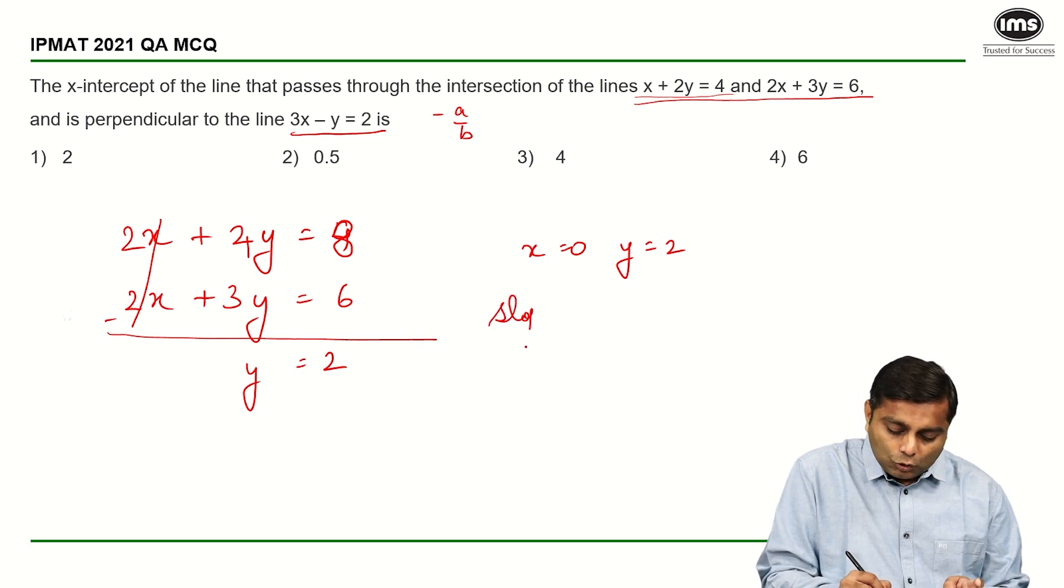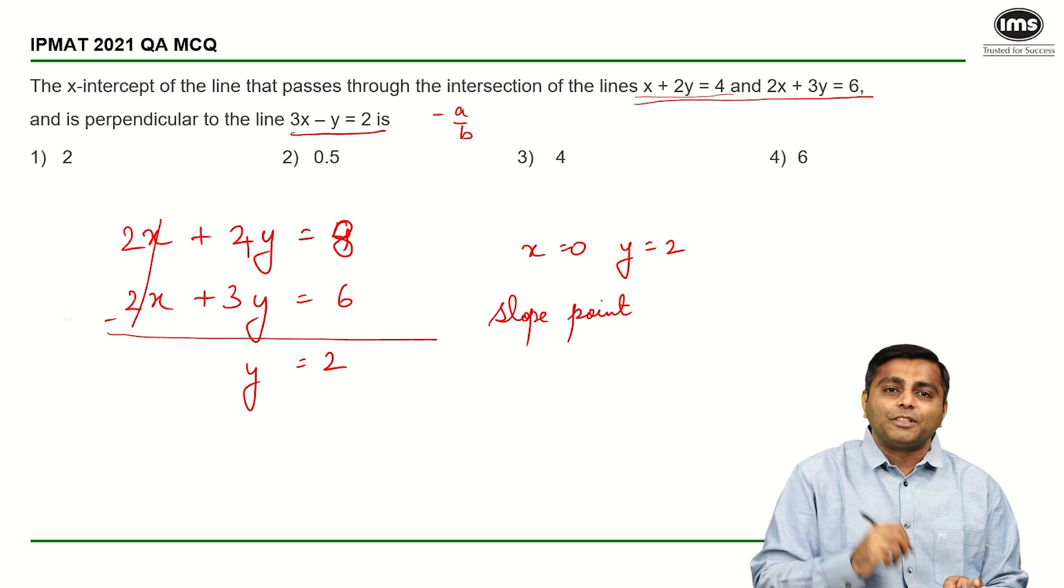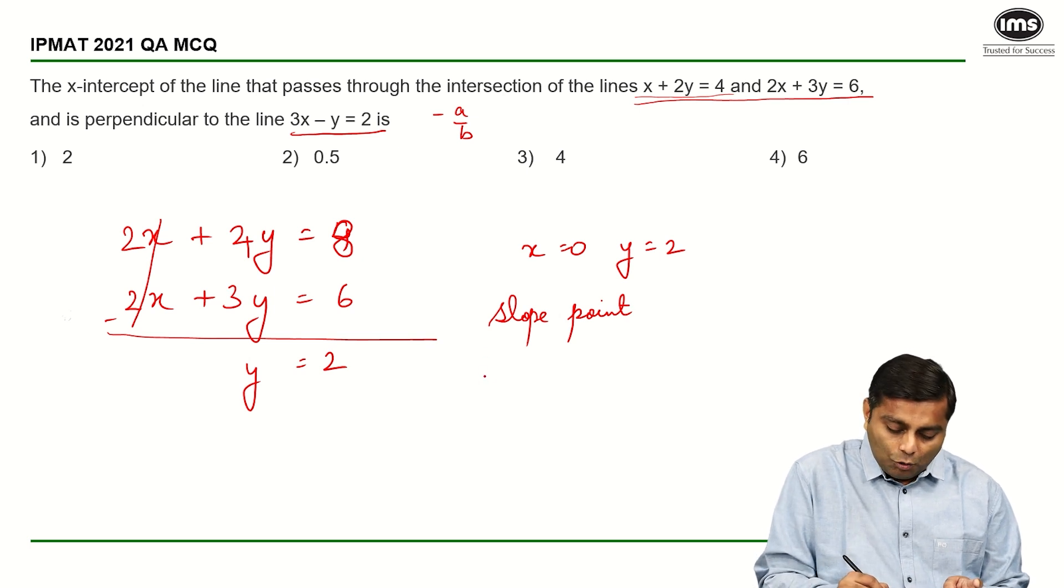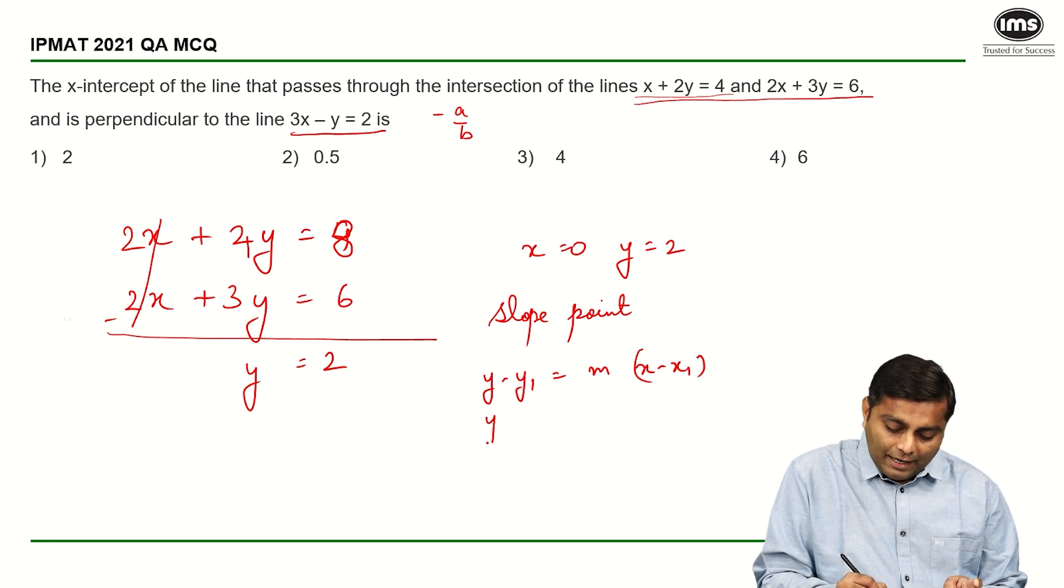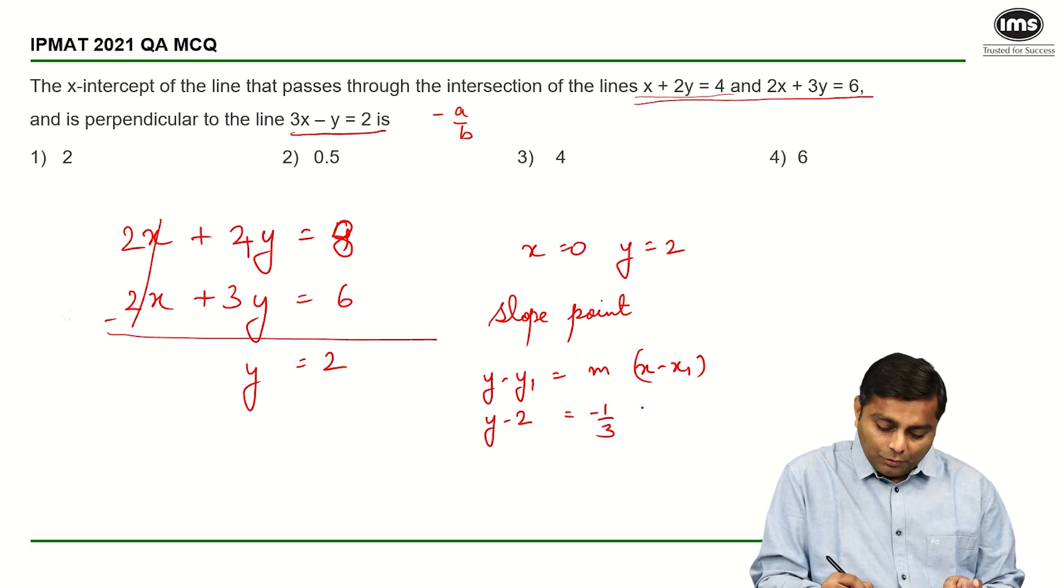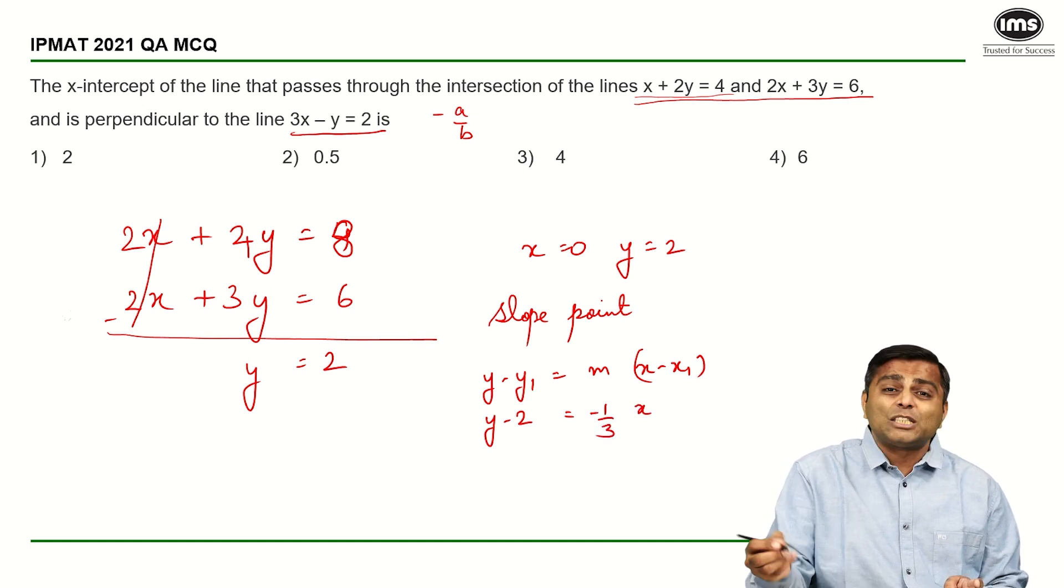So slope point form, we just use that to find the equation of our line. So y minus y1 is equal to m times x minus x1. I hope you know this. So y minus y1 which is 2 is equal to minus 1 by 3 times, that is the slope that we figured out, which is x minus x1 which is 0.